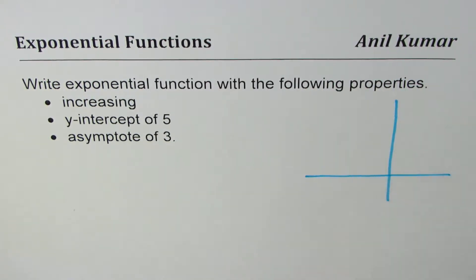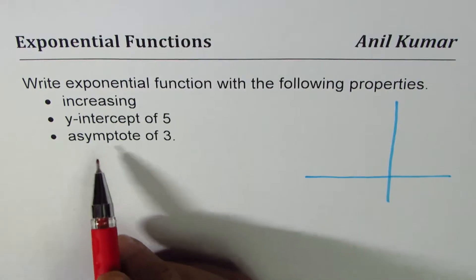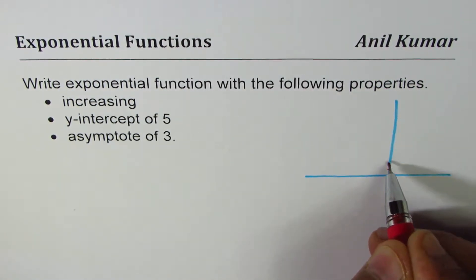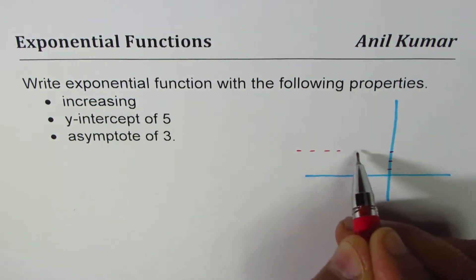Let me just sketch a graph of a function which could be matching with the given description. It says horizontal asymptote of 3, so let's say this is unit 1, this is 2, this is 3, then horizontal asymptote is this one.